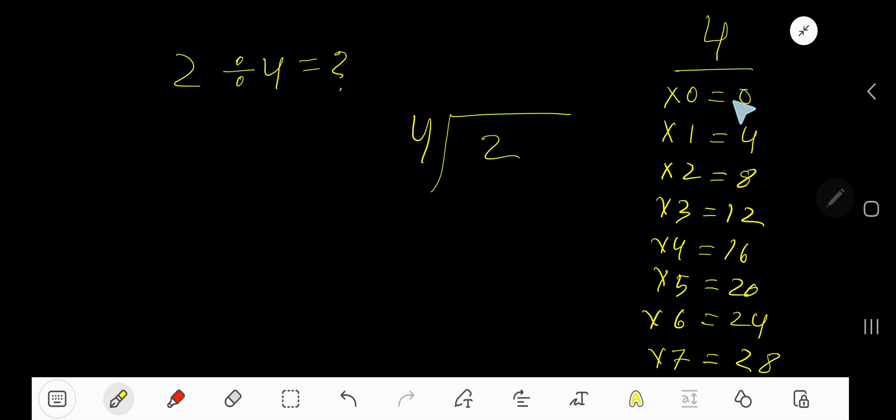To find out the multiplication table of 4, just add 4 with the previous table. 0 plus 4, 4. 4 plus 4, 8. 8 plus 4, 12. 12 plus 4, 16. 16 plus 4, 20. This process will continue.